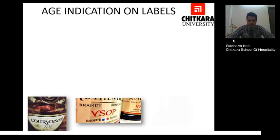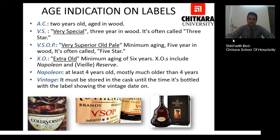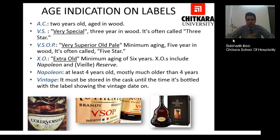Aging indication on brandy barrels: to differentiate various types of brandies, a basic age indication is shown on the label. AC stands for two years old aged in wooden barrels. VS — Very Special — is often called three star. VSOP — Very Superior Old Pale — has a minimum aging of five years in wooden barrels and is also called five star. XO — Extra Old — has a minimum aging of six years and includes Napoleon and Vieille. Napoleon is at least four years old but mostly much older. Vintage brandy must be stored in the cask until it is bottled, showing the date of the vintage on the label.